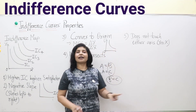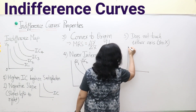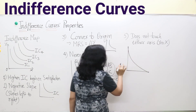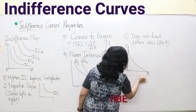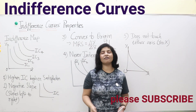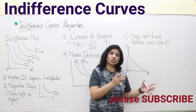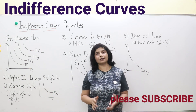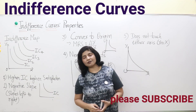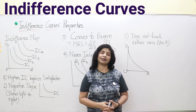The fifth property is that an indifference curve does not touch either axis. When two commodities are being consumed, the curve cannot touch the Y-axis or the X-axis. These are the properties of indifference curves. In our next video, we will discuss consumer equilibrium using indifference curve analysis. Keep watching, subscribing, and liking our channel. Thank you so much.